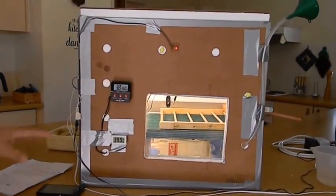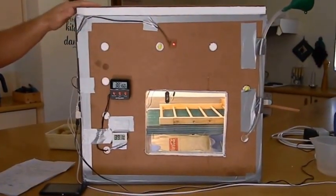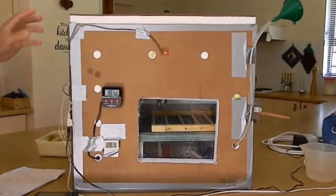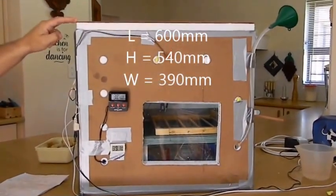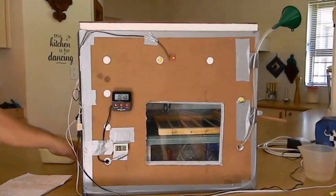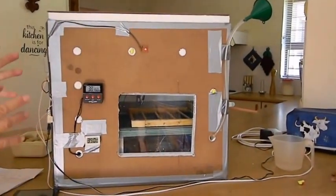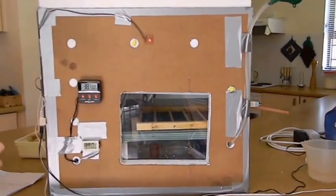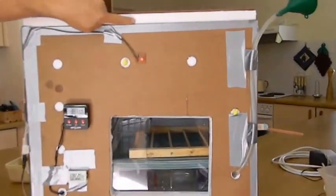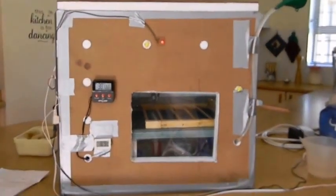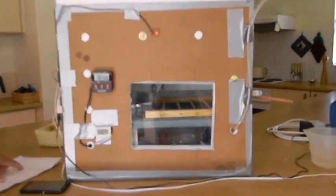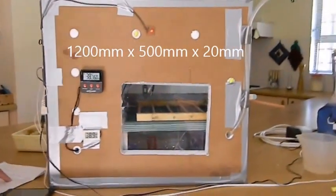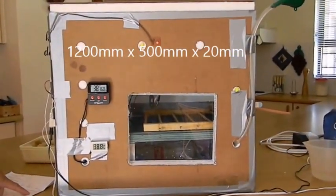The incubator itself has certain dimensions: 600 millimeters by 540 millimeters by 390 millimeters. Essentially, we started by creating a polystyrene box. You can see the polystyrene here, it's got a thickness of 20 millimeters and we bought it from our local hardware shop. The dimensions of the sheets were 1200 millimeters by 500 millimeters by 20 millimeters. We bought three of those, actually used three of those.